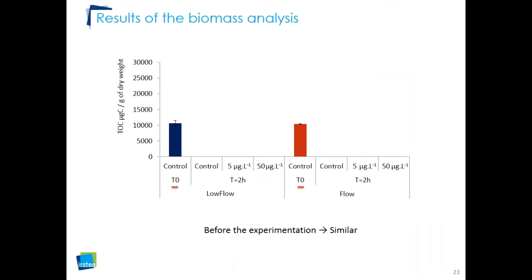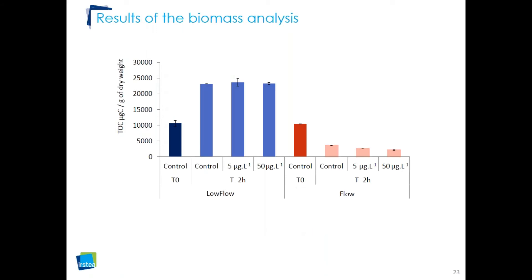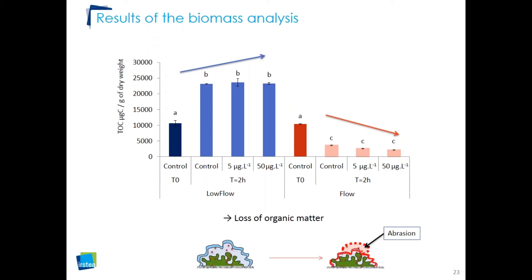The first results concern the biomass analysis, expressed as total organic carbon in micrograms of carbon per gram of dry weight, as a function of the different flow conditions. Results in blue correspond to the low flow condition and in red to the high flow condition. At T0, results are similar between the two flow conditions. After two hours of exposure, under low flow there is an increase of total organic carbon, whereas under high flow there is a decrease, suggesting a loss of organic matter — indicative of an abrasion phenomenon.